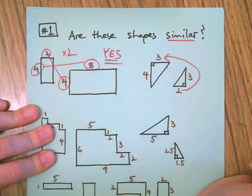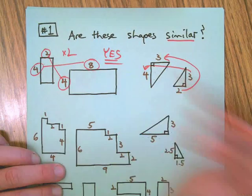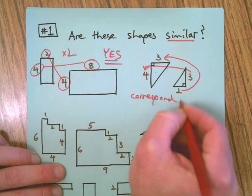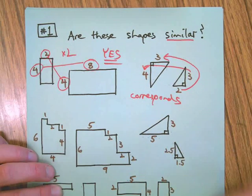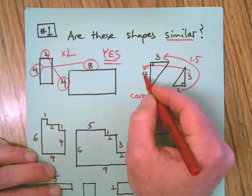The two corresponds to the three, the three corresponds to the four. Do they use the same multiplier? No, because two times one and a half is three, three times one and a third is four. So that's a no.